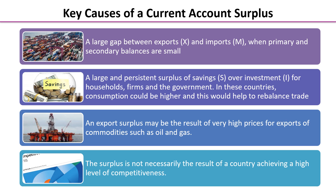In these countries, consumption could be quite a lot higher and this would help to rebalance trade. It may also be that an export surplus is a result of very high prices for exports of commodities such as oil and gas — PED would need to be low for this to be the outcome. And the surplus isn't necessarily the result of a country achieving a high level of competitiveness.